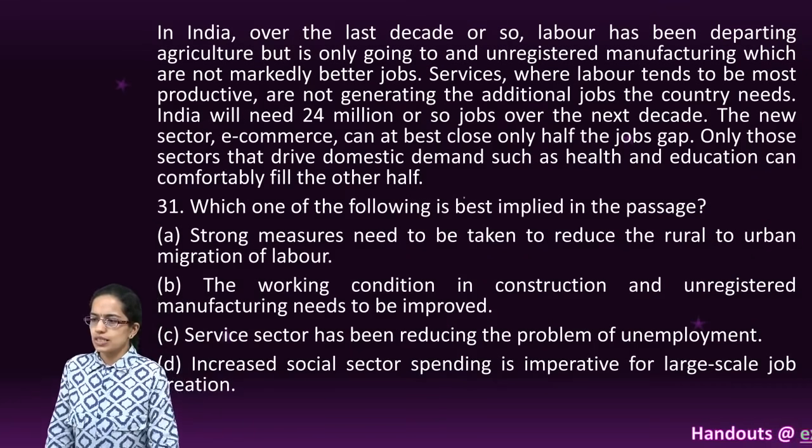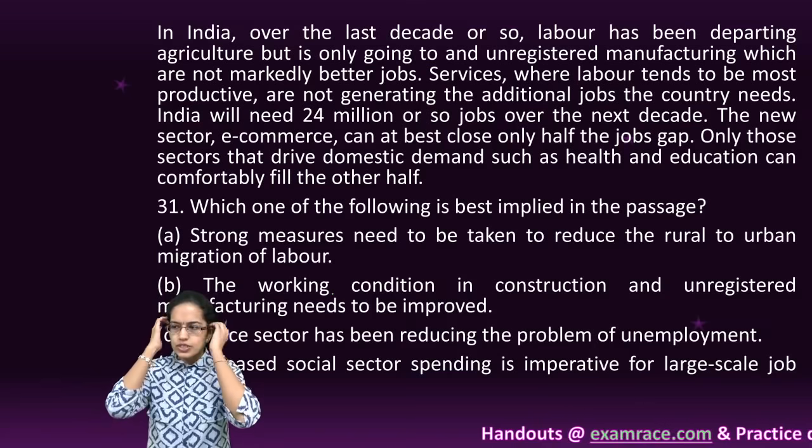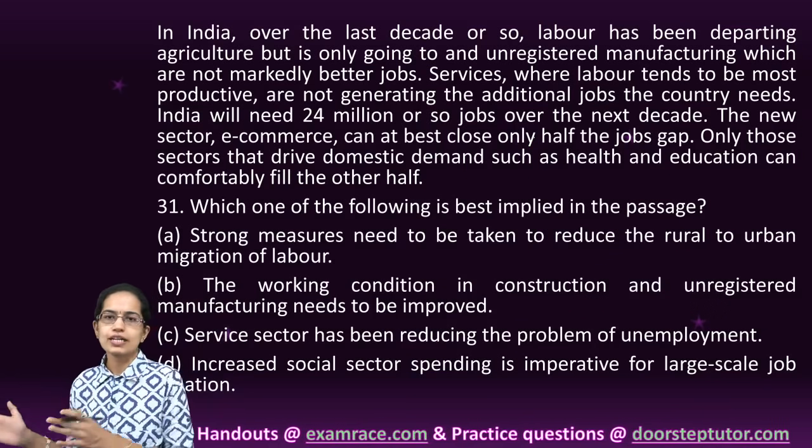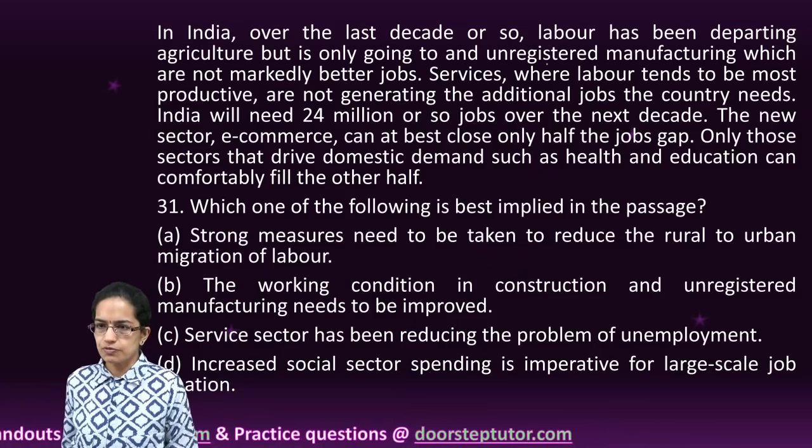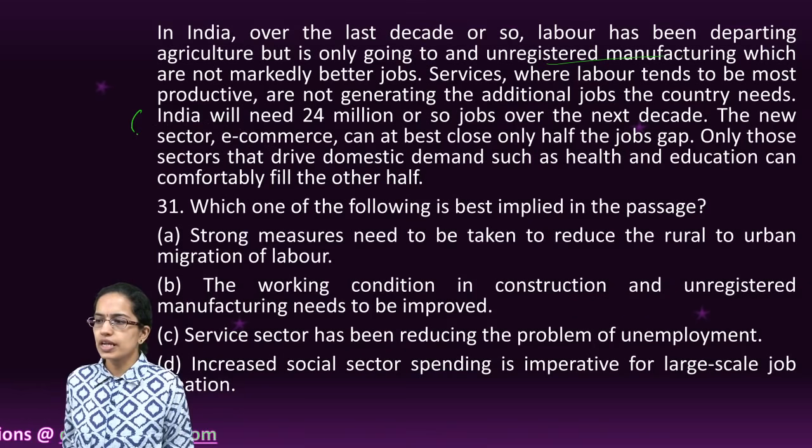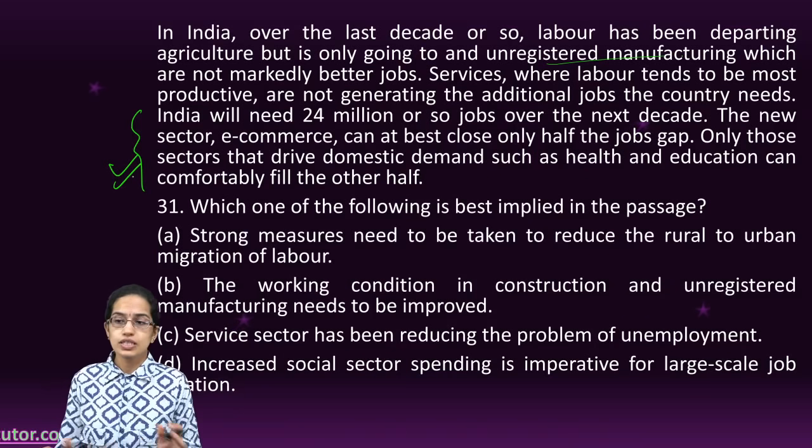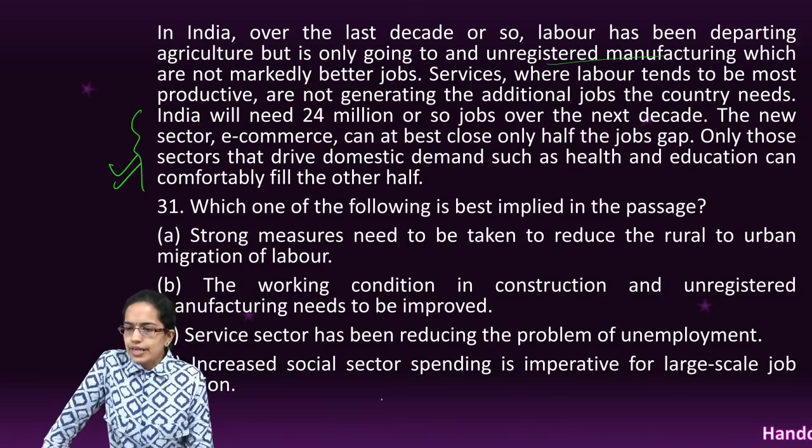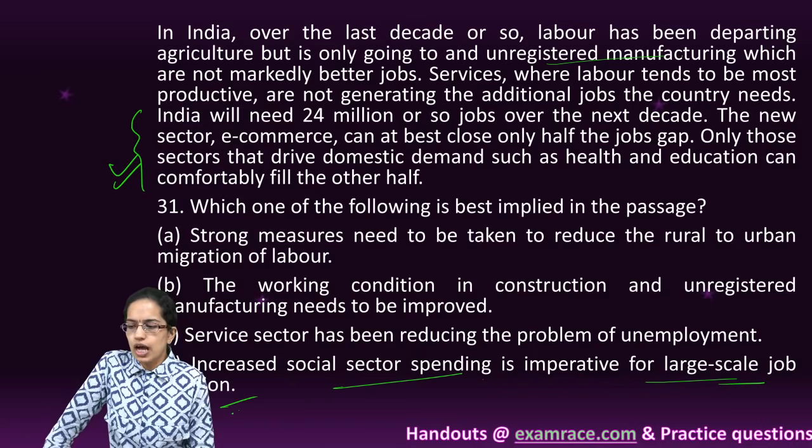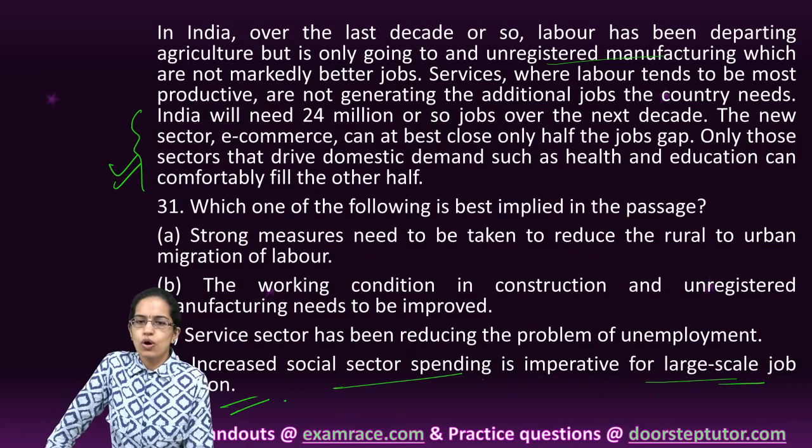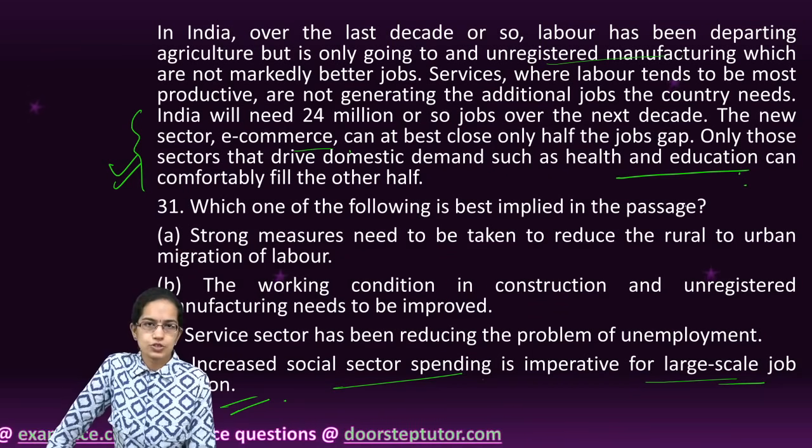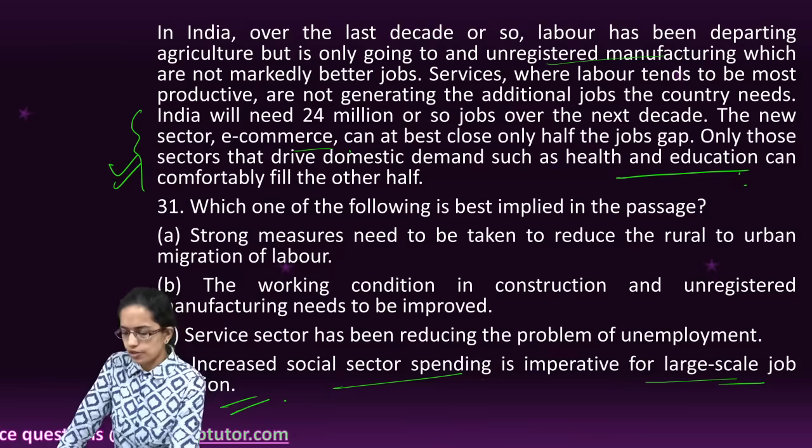The next question is based on the passages, a group of questions based on passages. Now here we are talking about labor departing from agriculture towards unregistered manufacturing sector. The idea here is increased social sector spending is an imperative for large scale job creation. So D is the right option.